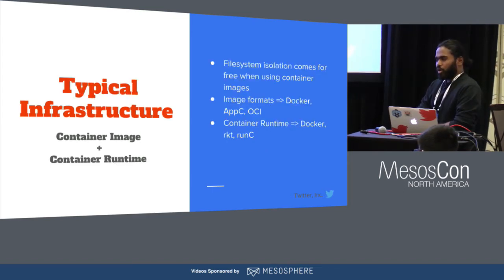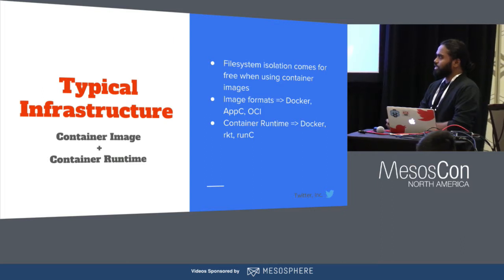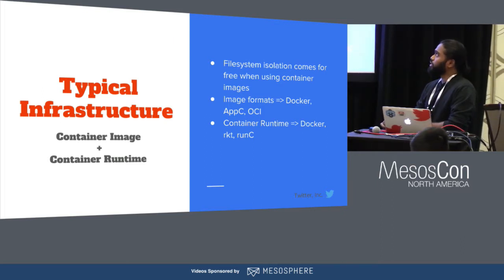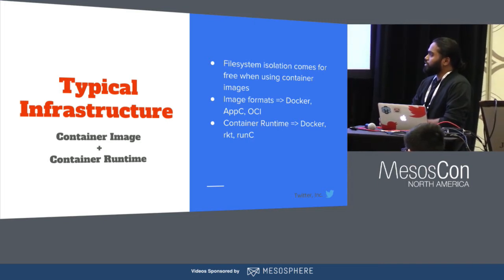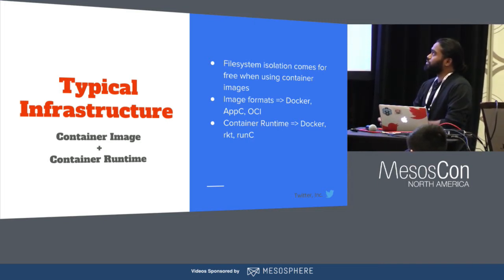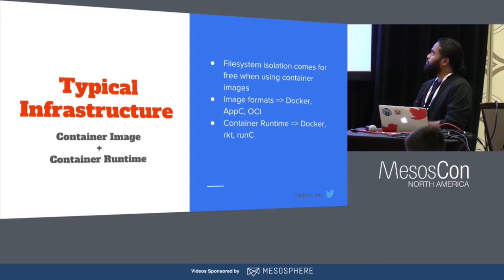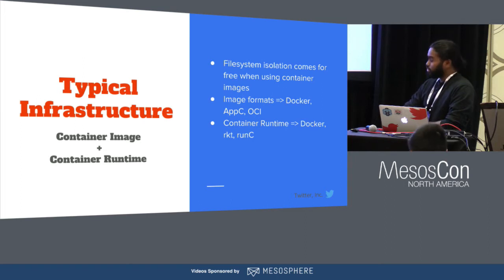Let me talk about how a typical container infrastructure is usually set up. It usually contains both a container image and a container runtime. Any infrastructure that uses a container image gets file system isolation for free. There are several types of image formats available in the community right now, namely Docker, AppC, and OCI. Their corresponding runtimes are Docker, Rocket, and RunC.